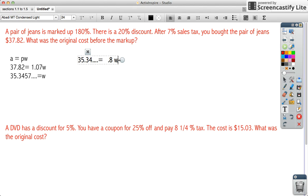We divide. So on my calculator, I already have that $35 and 30, you know, 3457 and so on. I'm going to divide by 0.8. And that gives me approximately $44.18, but I'm going to leave that on my calculator. That's the cost before the 20% discount.